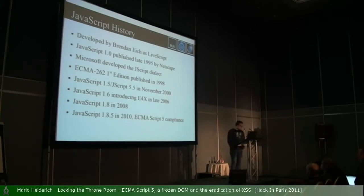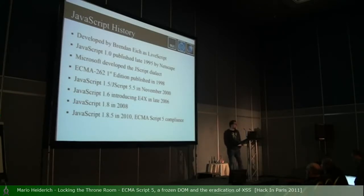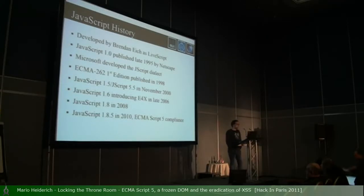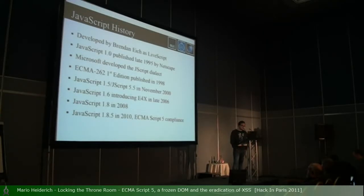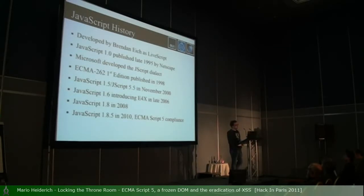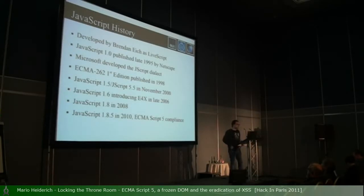Two years later, JavaScript 1.8 was released, bringing many novelties in terms of capabilities for programmers — function expressions, destructuring assignment, and a lot of stuff usually only known from higher-class languages such as C++. Finally, in 2010, JavaScript 1.8.5 was released and was actually the first version of JavaScript being fully ECMAScript 5 compliant.